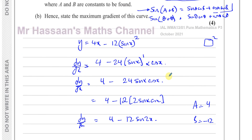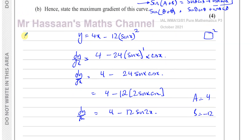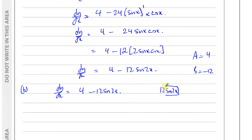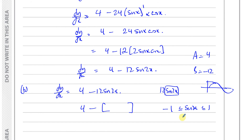The question then says hence state the maximum gradient of this curve. So we need the maximum value of dy/dx equals 4 minus 12 sine 2x. The maximum value of the gradient depends on 12 sine 2x. Now sine 2x can vary between 1 and minus 1 — that's the maximum range for sine of any angle. So 12 sine 2x can vary between 12 and minus 12.